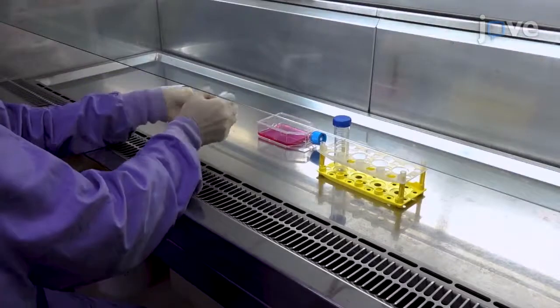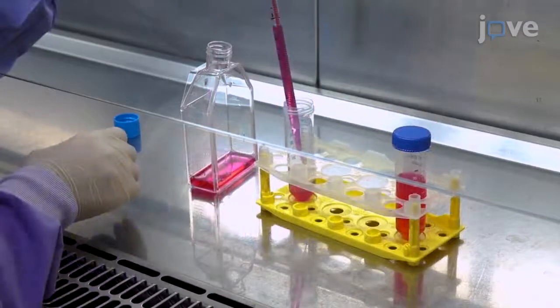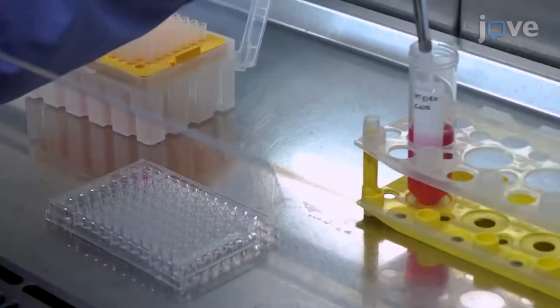Start plating HT1080 cells on day 1 by diluting the cells to a concentration of 1 times 10 to the 5th cells per milliliter in pre-warmed complete DMEM media.